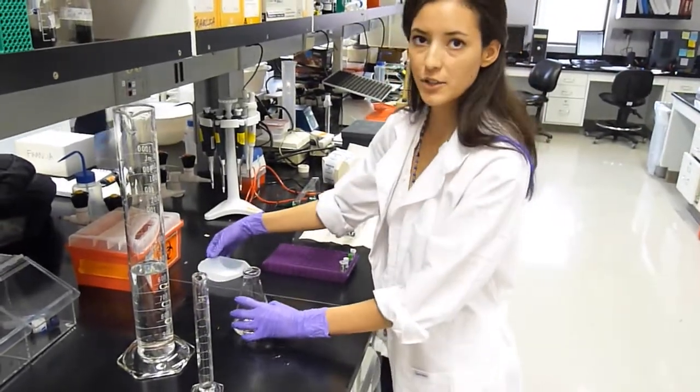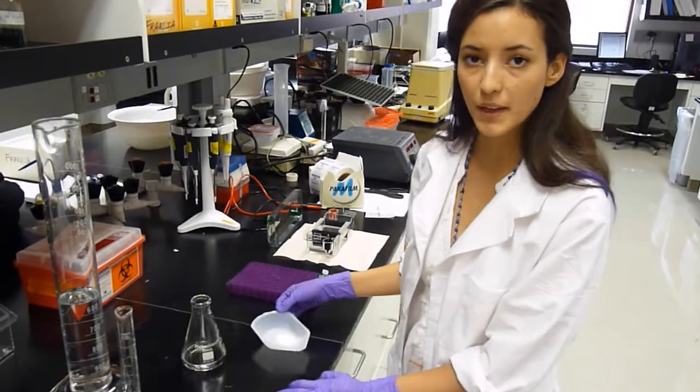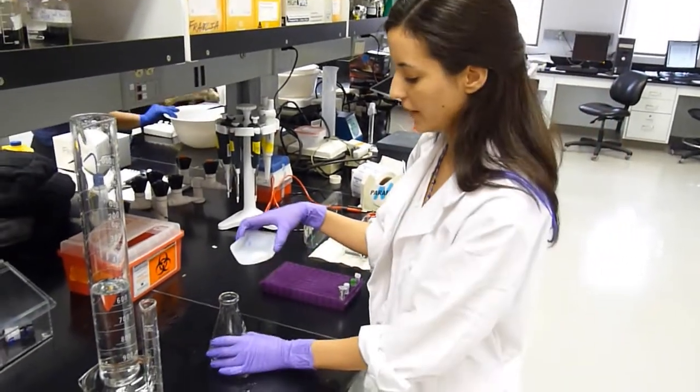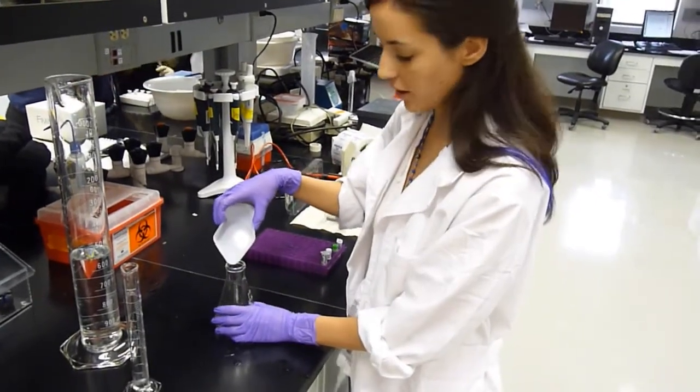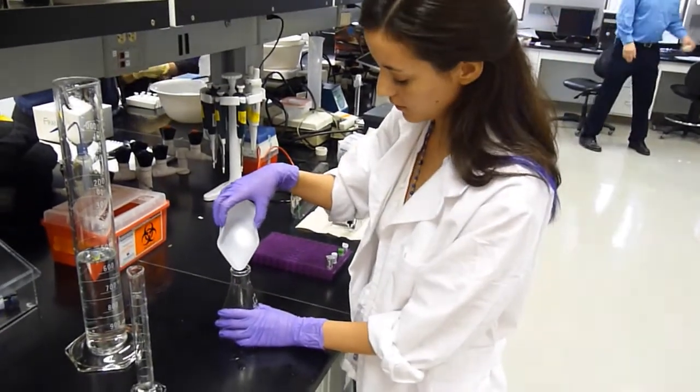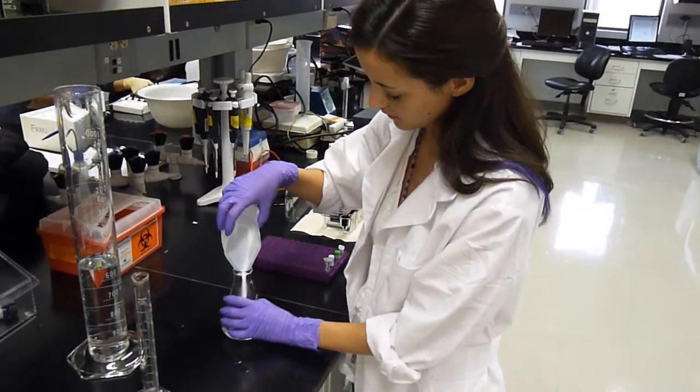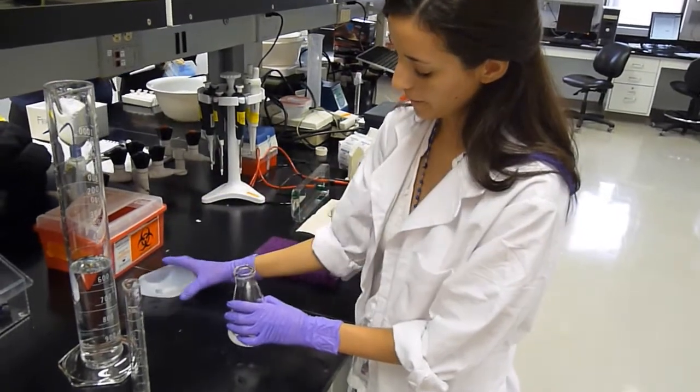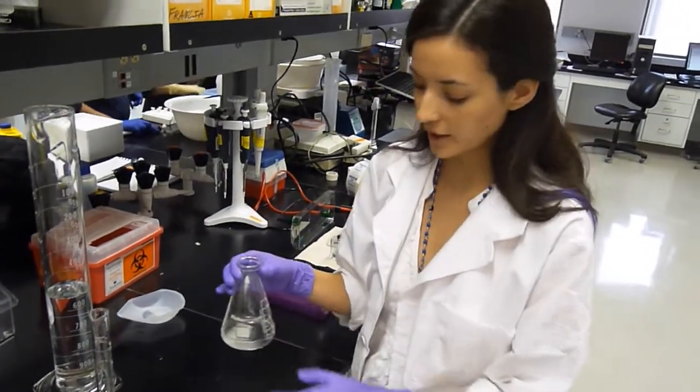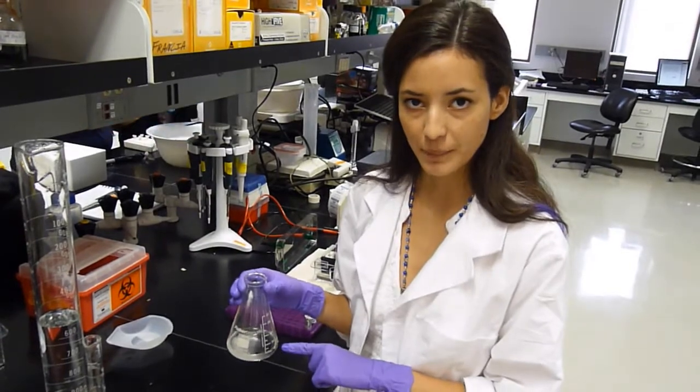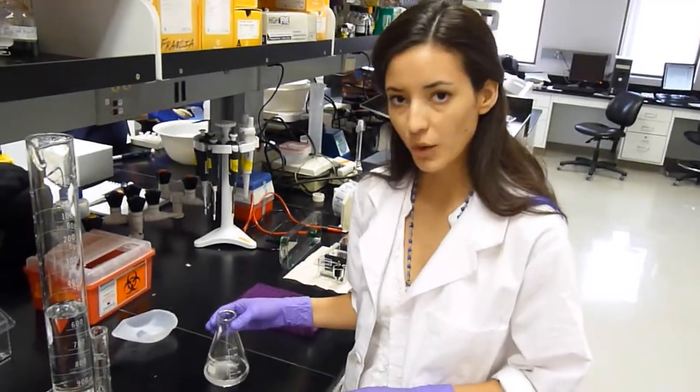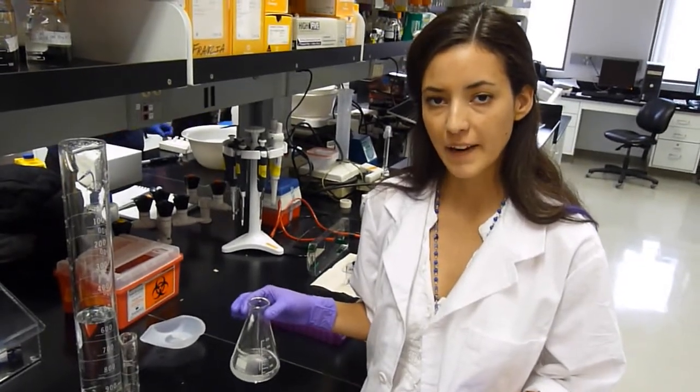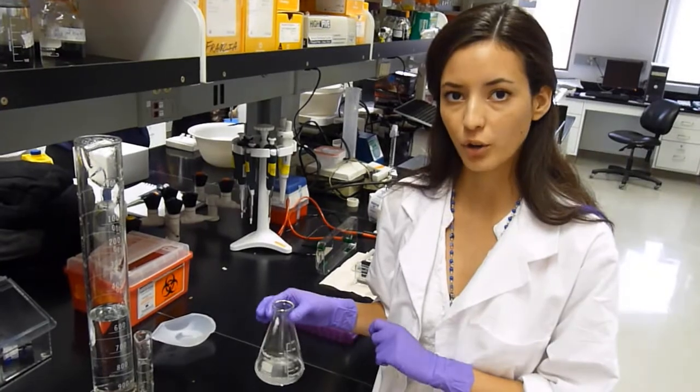We have previously measured out our agarose to 0.5 grams because we're making a 1% agarose gel. And then you just want to pour in the agarose into the Erlenmeyer flask with your 1x TAE solution. A helpful tip that I learned is to not mix this solution before heating it up. Then you want to microwave it in 30 second intervals and be careful to monitor it so that it doesn't boil over.